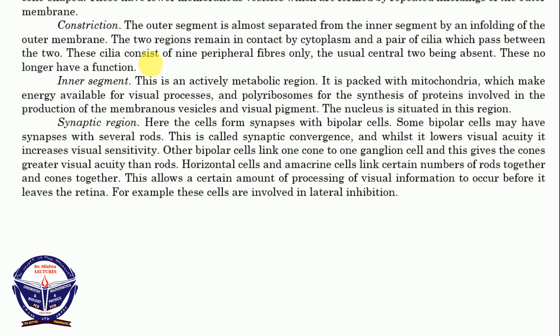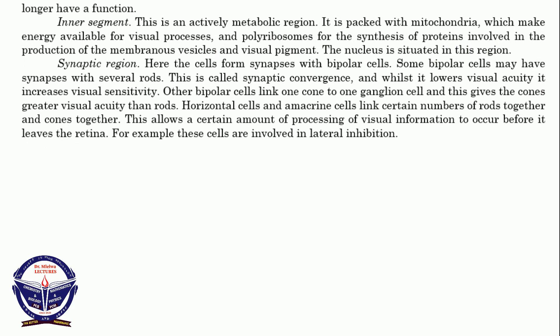We also have the inner segment. This is an active metabolic region, and because it is an active metabolic region, many such regions are packed with mitochondria for production of energy in the form of ATP. So the inner segment is packed with mitochondria which make energy available for visual processes. It also contains polyribosomes for synthesis of proteins involved in the production of the membranous vesicles and visual pigment. The nucleus is also located in this region.